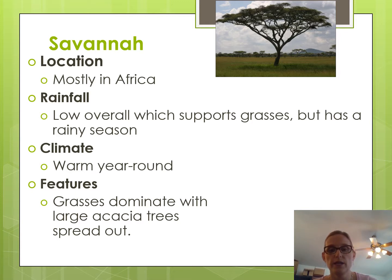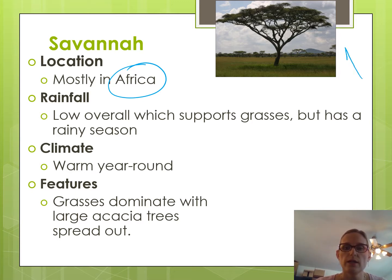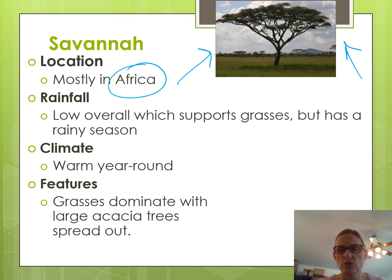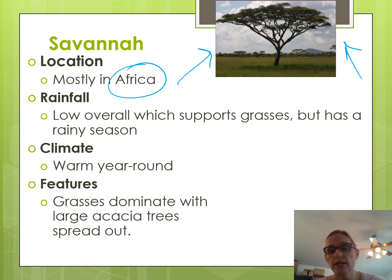The next biome is the savannah. The most popular place associated with the savannah is Africa, and that is most likely what will be asked about on your test. Think of the Lion King — big acacia trees and grasses. The savannah has low rain overall but a big rainy season. Wildebeest migrate to where it's going to rain. Overall throughout the year it's fairly dry, and it supports grasses mostly instead of trees.